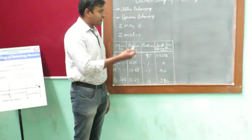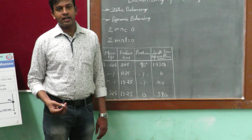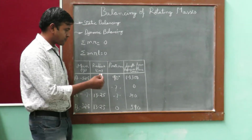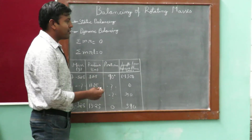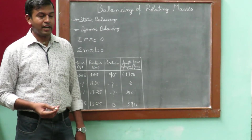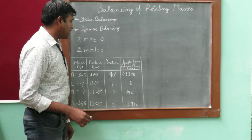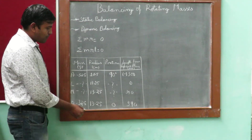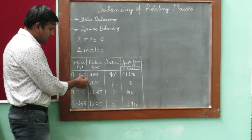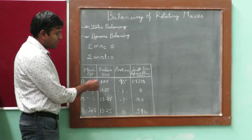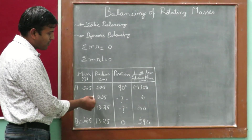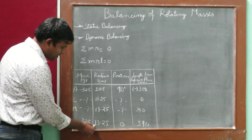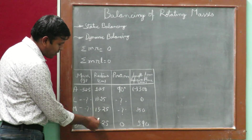We can solve this either analytically or graphically. We will solve it analytically, and I will also show how it can be done graphically to scale. The masses A and B are placed at the planes — 525 grams and 325 grams. The radius at which the masses are placed is 10.5 centimeters for A and 13.5 centimeters for the other masses.